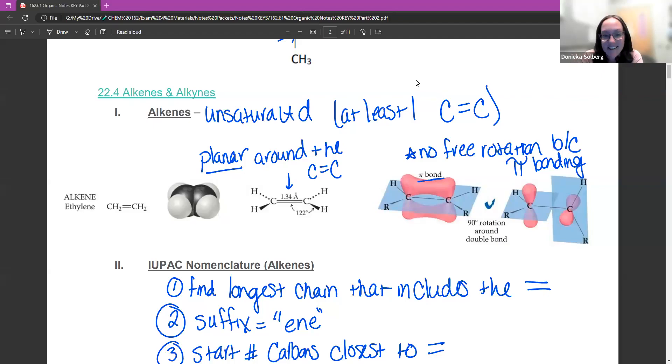Moving on to alkenes and alkynes. We did all the naming for alkanes, molecules that only have single bonds. Now we're going to talk about double bonds. Alkenes are called unsaturated hydrocarbons because they have at least one double bond in there. That means they don't have as many hydrogens as possible. We took off two hydrogens to make that double bond instead.